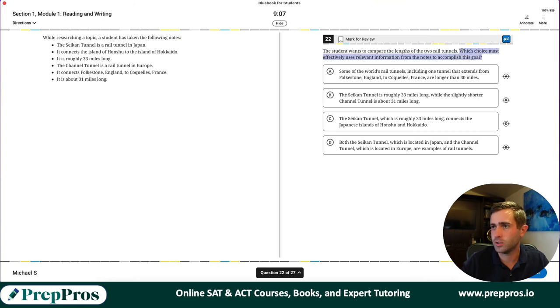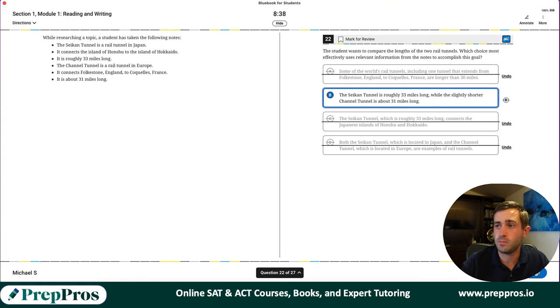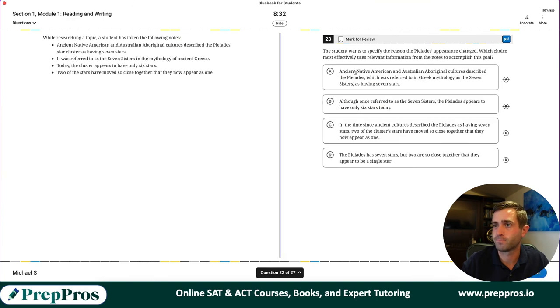Compare the lengths of the two tunnels. A lot more of these specific which choice questions. Which choice most effectively uses relevant information? The really important part is I'm comparing the lengths of them. So Seikan is in Japan, here's a length. Channel is in Europe, here's its length. It's just going to be B here. With these questions, it's really important, any sort of which choice question, make sure you're answering the question.